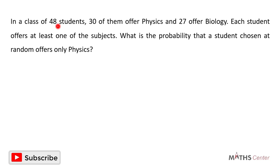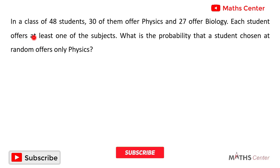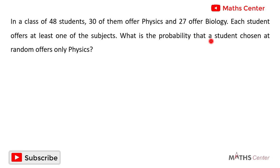In a class of 48 students, 30 of them offer physics and 27 offer biology. Each student offers at least one of the subjects. What is the probability that a student chosen at random offers physics only?